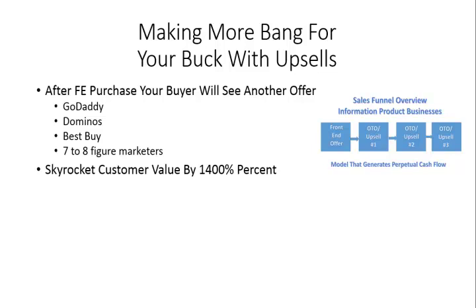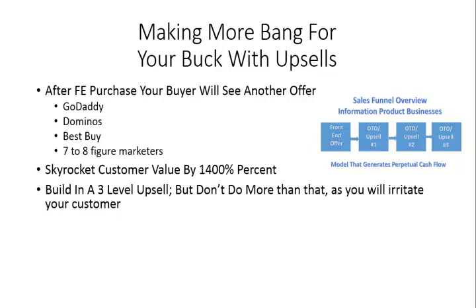It's very easy to do that if a customer makes a front-end purchase and buys all the upsells that you give them. What we have been talking about in this course is building a three-level upsell. You don't want to do more than that — it will irritate your customer and prevent them from wanting to enter into another buying relationship with you again, even if they're on your email list. Three is the limit, and in some cases, based on the niche, you may want to consider doing even less than that.